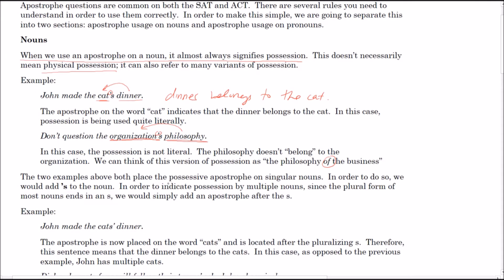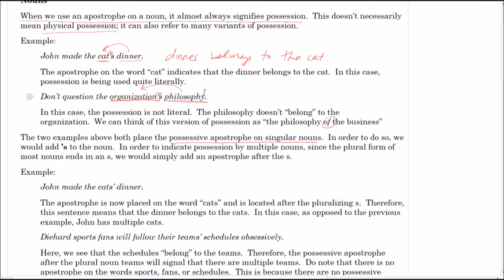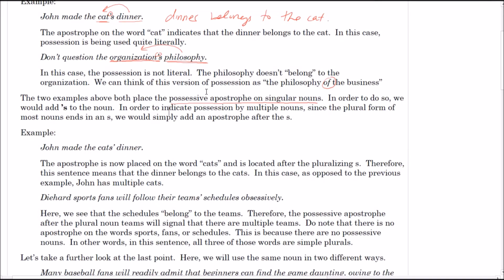Both of these are possessive apostrophes on singular nouns — meaning it is one cat that owns the dinner and one organization that owns the philosophy. When we pluralize a noun, we typically append an S. So how would we indicate possession on that? Would we do S-apostrophe-S? Well, actually we wouldn't. Anytime we want to place S-apostrophe-S, we should just place S-apostrophe instead.